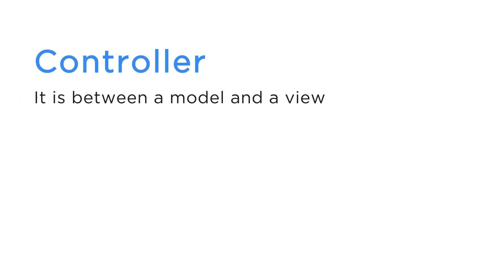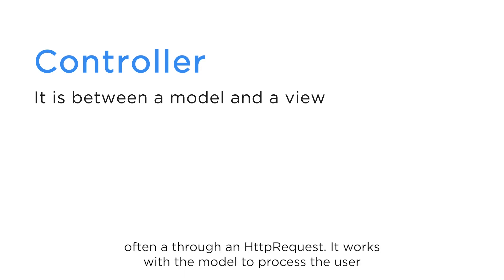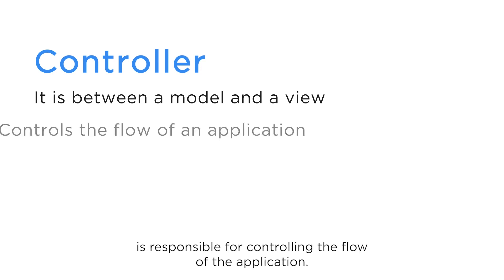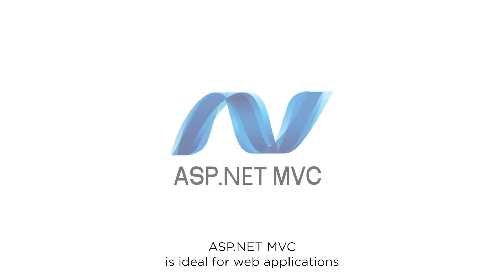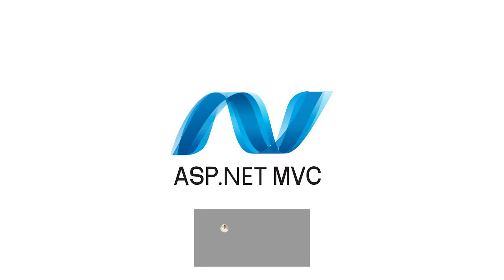The controller acts as an intermediary between the model and the view. It handles user input, often through HTTP requests, works with the model to process data, and selects a view to render that data. In simple terms, the controller is responsible for controlling the flow of the application.